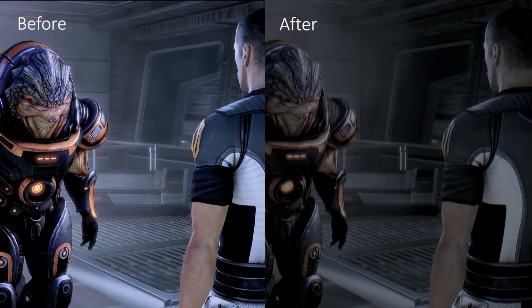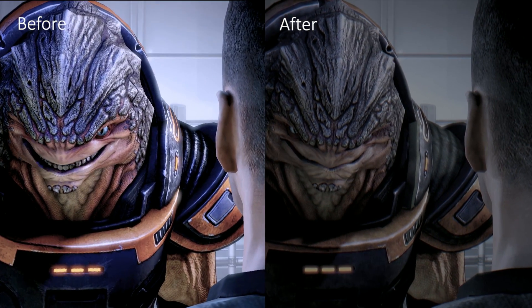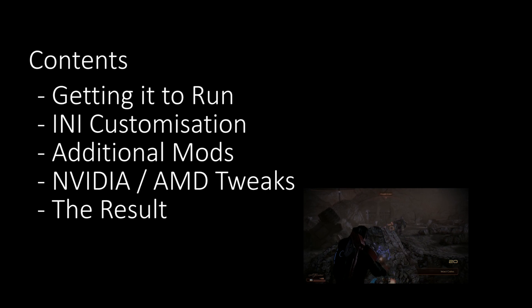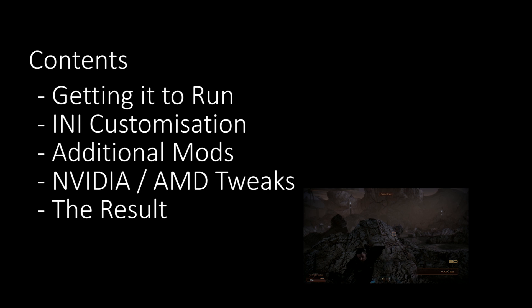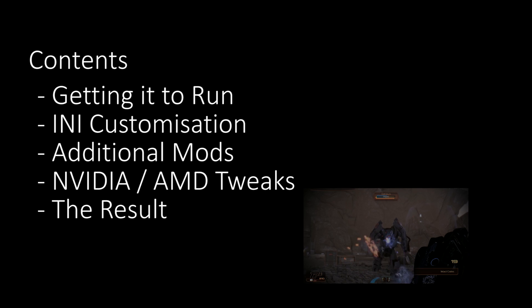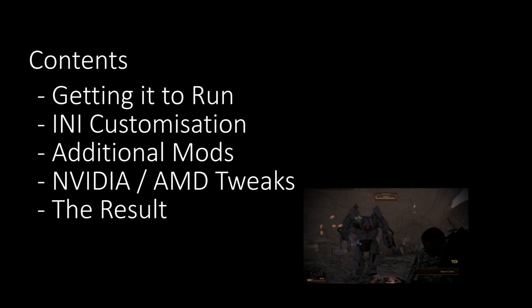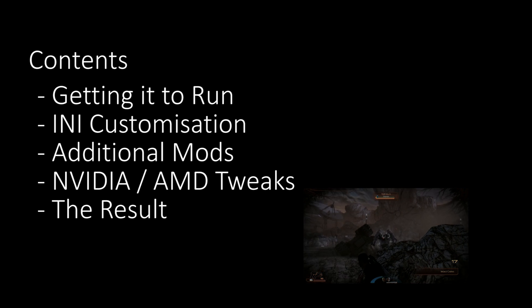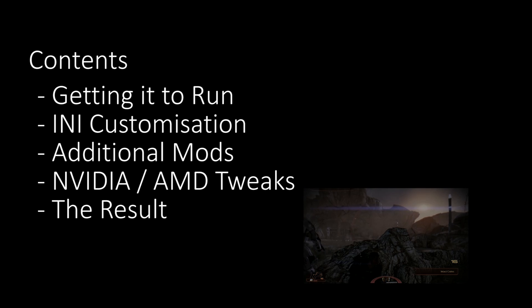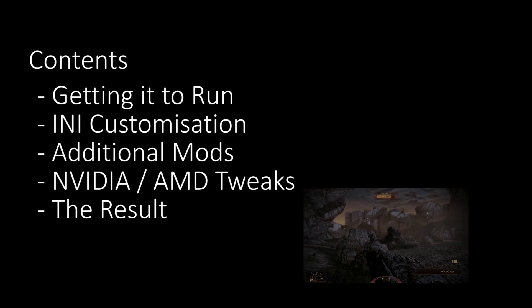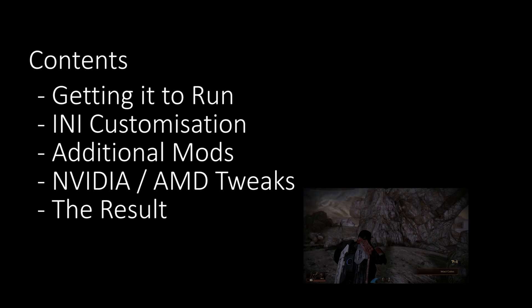Mass Effect 2 has a great art style and this guide will hopefully show it better. The first section will cover getting the game to run, including basic configuration. Then we'll move on to any customisation involving hidden graphical settings. The additional mods section will focus on larger modifications to the game, such as textures and post processing. The Nvidia and AMD tweaks will focus on changing graphic control panel settings, including adding anti-aliasing and ambient occlusion. And finally a demonstration of the results of this guide.